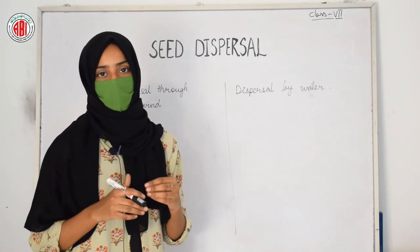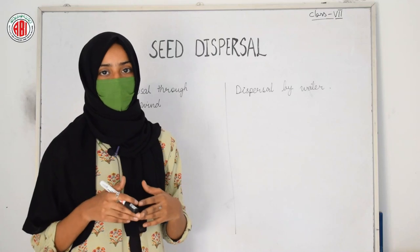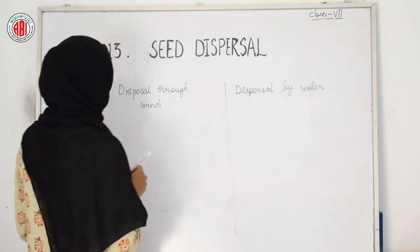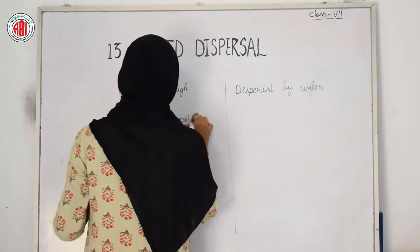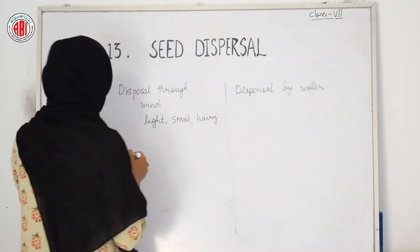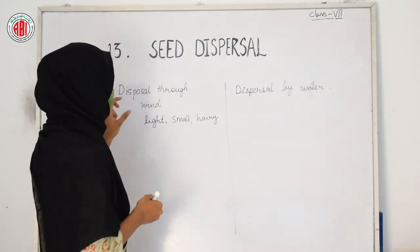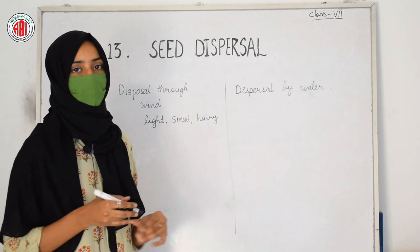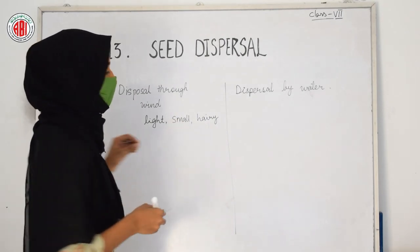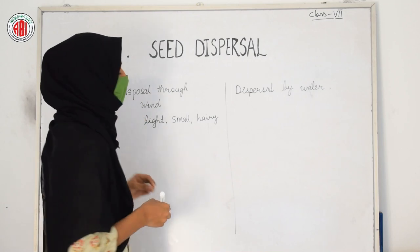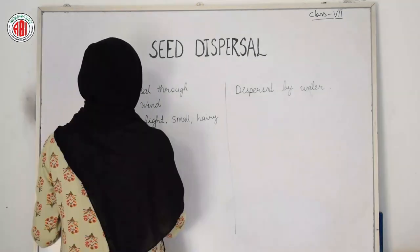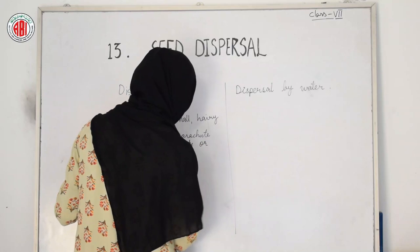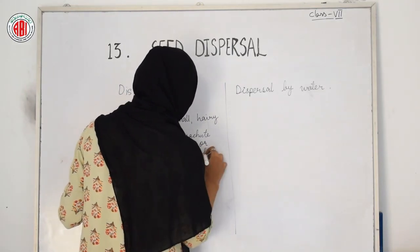The first agent is dispersal through wind. Wind is moving air and can help seeds move from one place to another place. Seeds can get dispersed through wind when they are light, small, and bear some hairy structures. This type of structure makes the seed move easily through wind to distant places.